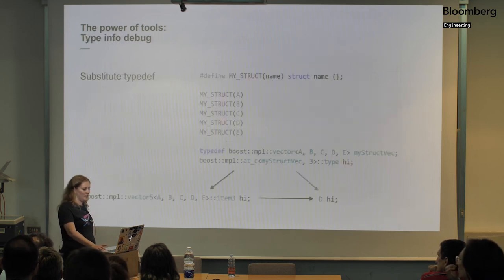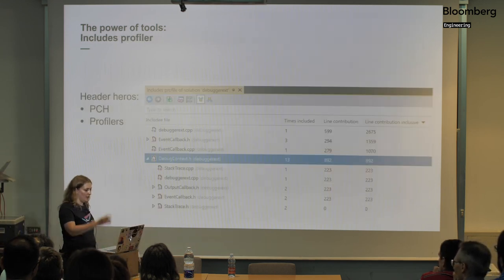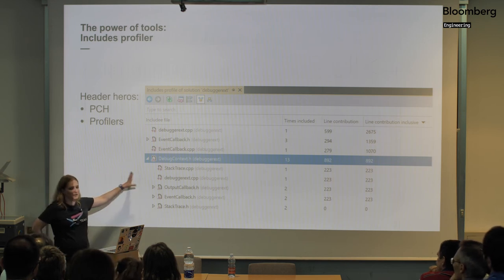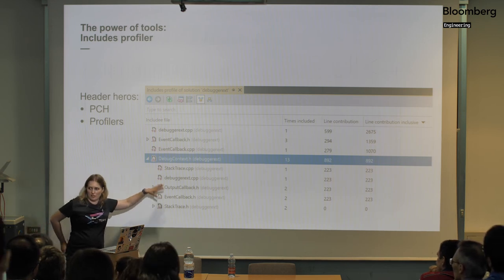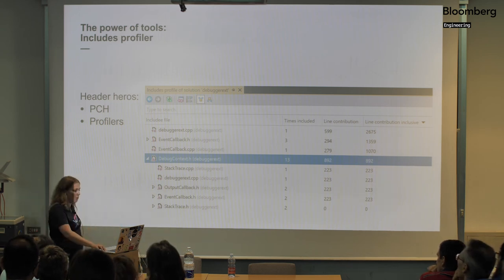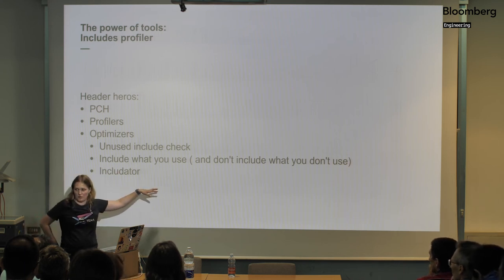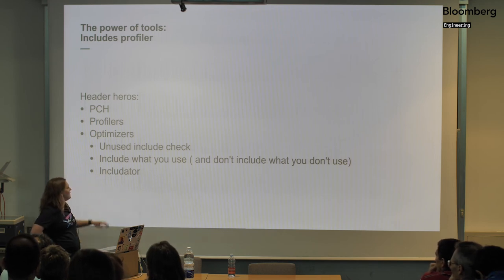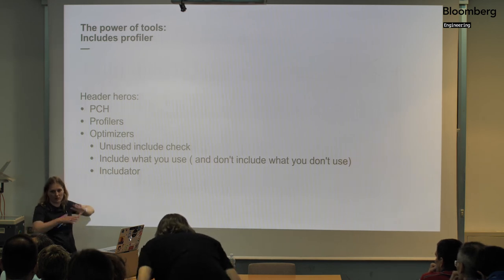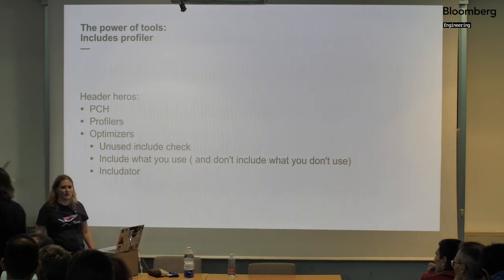Regarding the includes profiler: the include-what-you-use tool is based on Clang and uses the information Clang provides, which is quite powerful. Includator is likely also parsing the code to figure out what's needed, but I'm not fully aware of its internals.